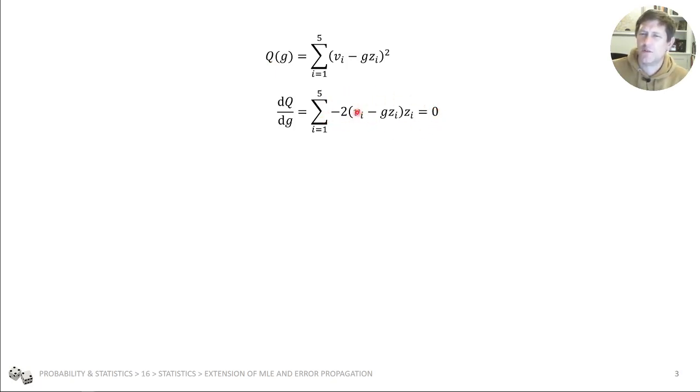We can sum the vi's, we can sum the zi's, and rearrange that. So we've got an expression for calculating the best fitting, or the most likely value of g, given our data, and that comes out at 9.71. So that's one instance of it.